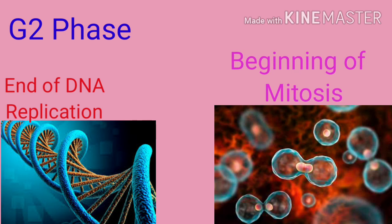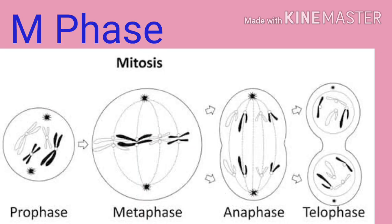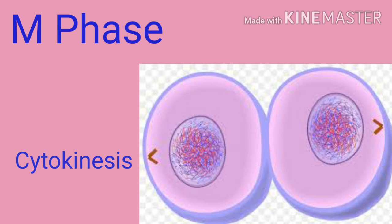During G2, cell organelles divide and chromosomes are prepared for mitosis. The M phase is the mitotic cell division phase. It includes prophase, metaphase, anaphase, and telophase, and also cytokinesis, which is the division of the cytoplasm.